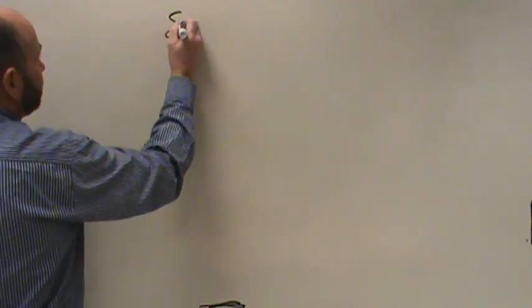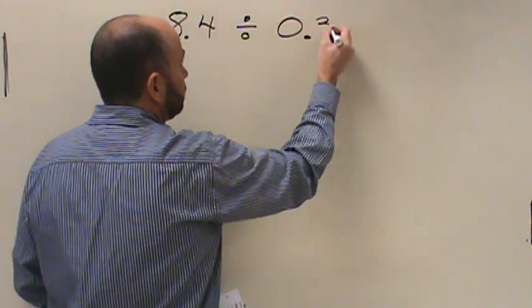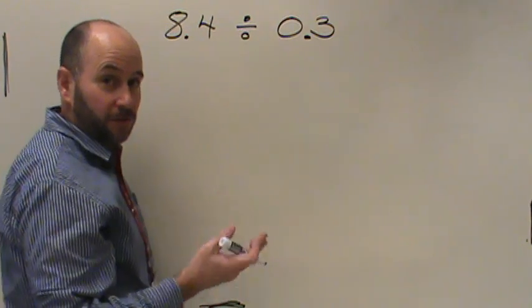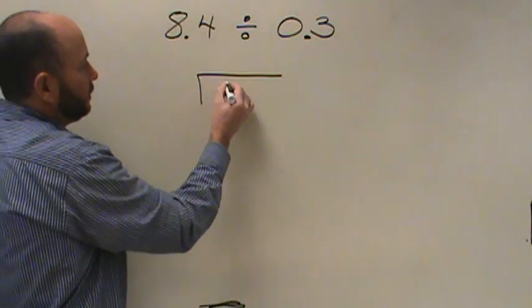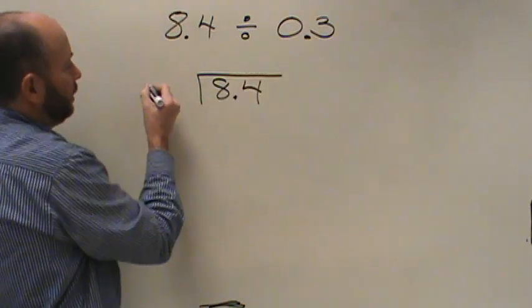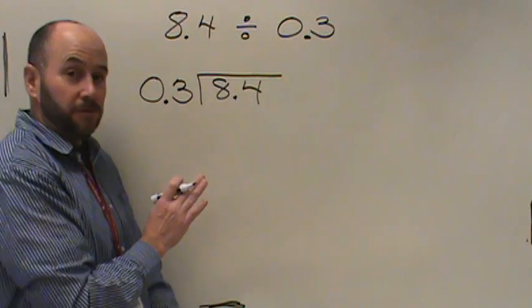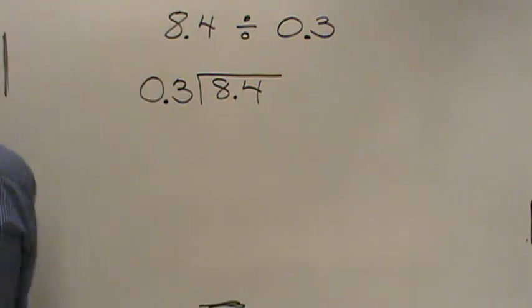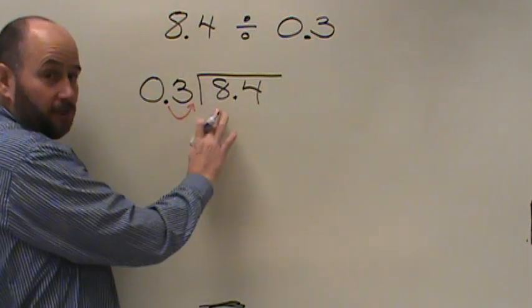Let's start off with a basic problem. Let's take 8 and 4 tenths divided by 0 and 3 tenths. When you look at this problem, you have your dividend and you have your divisor, so that tells you where to place your numbers in the problem. Make your division bracket — 8 and 4 tenths divided by 3 tenths. The very first thing you do is look and say, I have a decimal point in my divisor, so I have to turn that into a whole number.